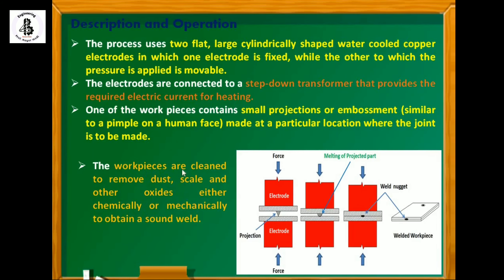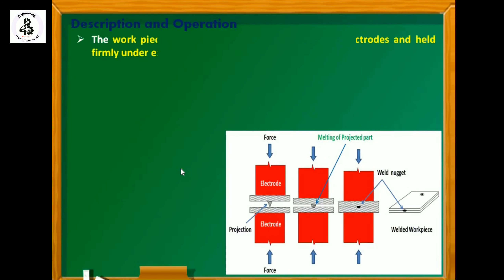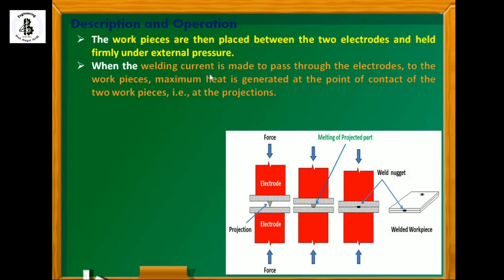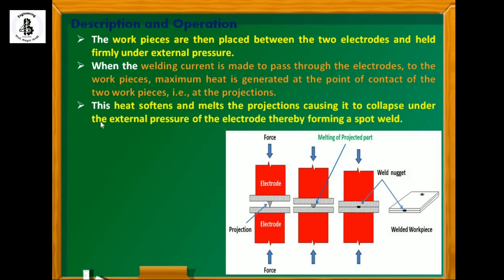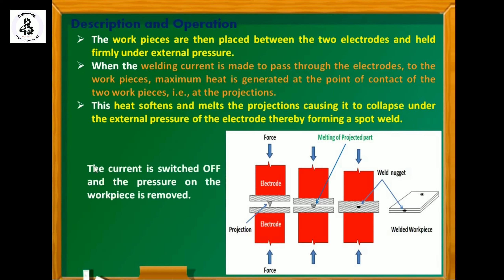The workpieces are cleaned to remove dust, scales, and other oxides either chemically or mechanically to obtain a sound weld — this is a basic necessity for any welding process. The workpieces are then placed between the two electrodes and held firmly under external pressure. When the welding current passes through the electrodes to the workpiece, maximum heat is generated at the point of contact — at the projection area. This heat softens and melts the projection, causing it to collapse under the external electrode pressure, thereby forming a spot weld. The current is then switched off and pressure is removed.